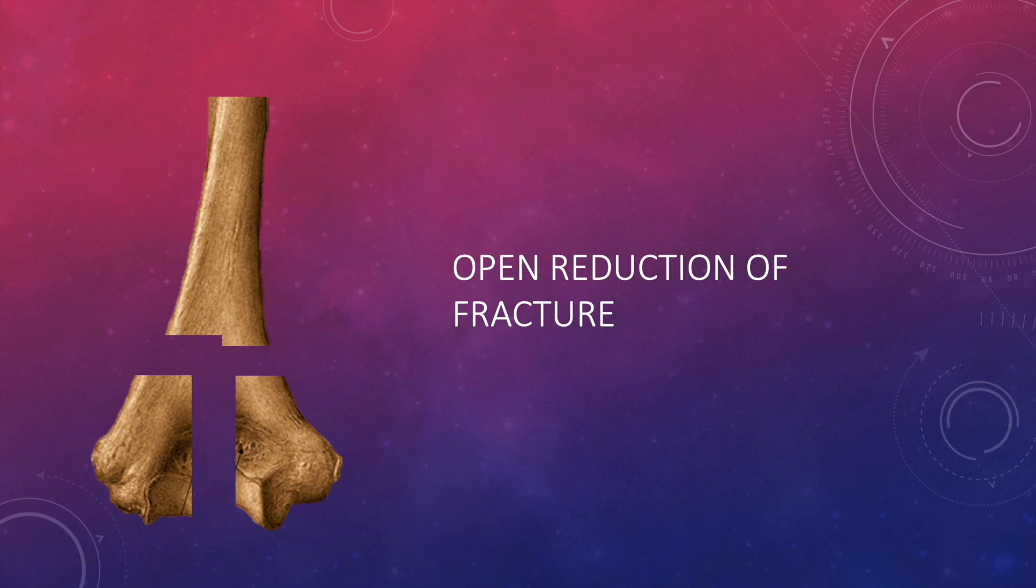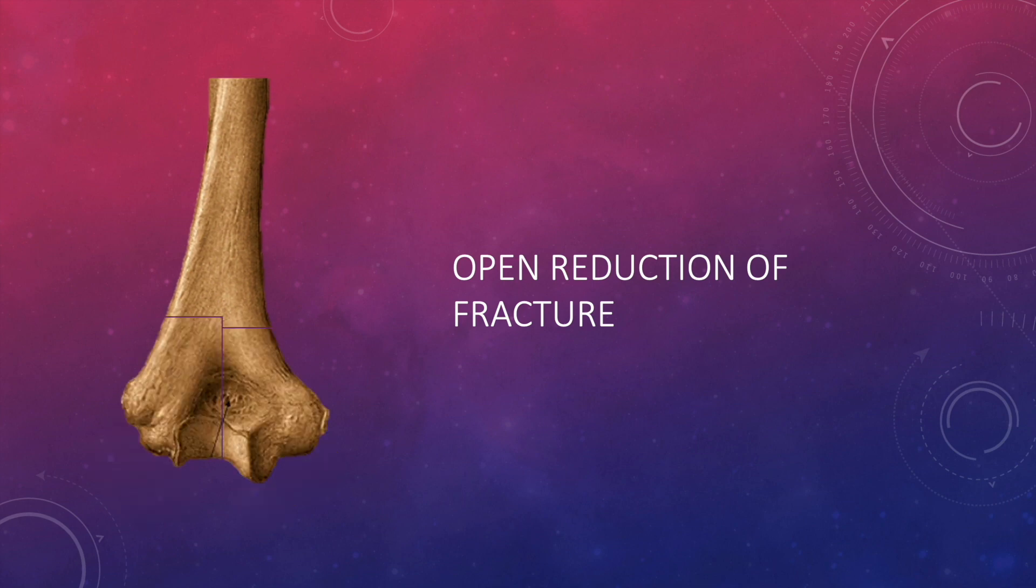Here also in Distal Humerus, we have to go for open reduction and then secure that reduction with the help of multiple K-wires. In cases when you are not able to visualize the joint properly, you can go for Olecranon Osteotomy also and then reduce the joint properly as you do in conventional Distal Humerus plate fixation.